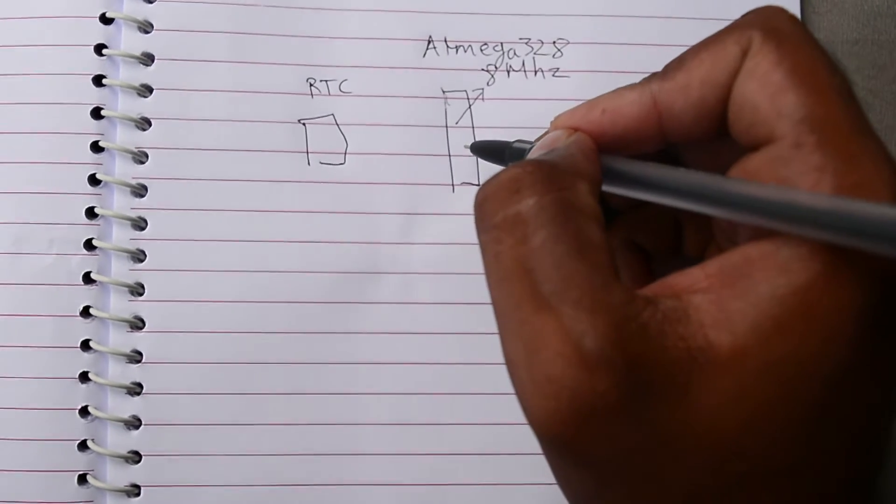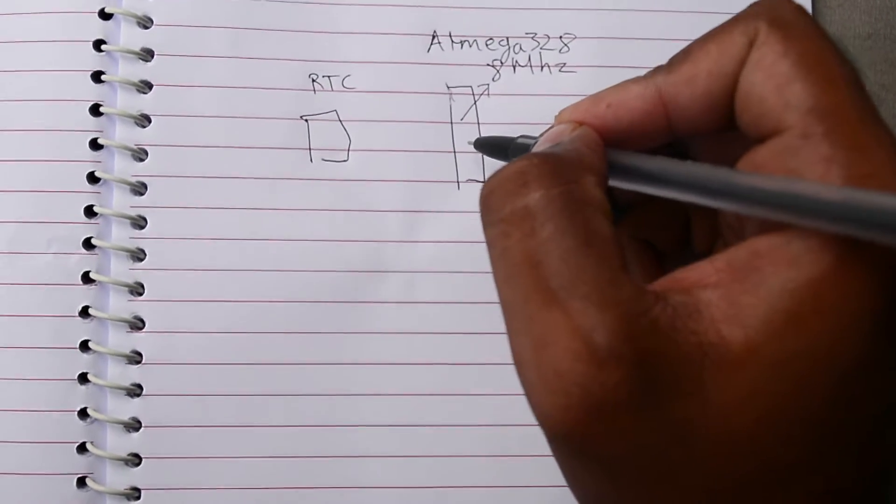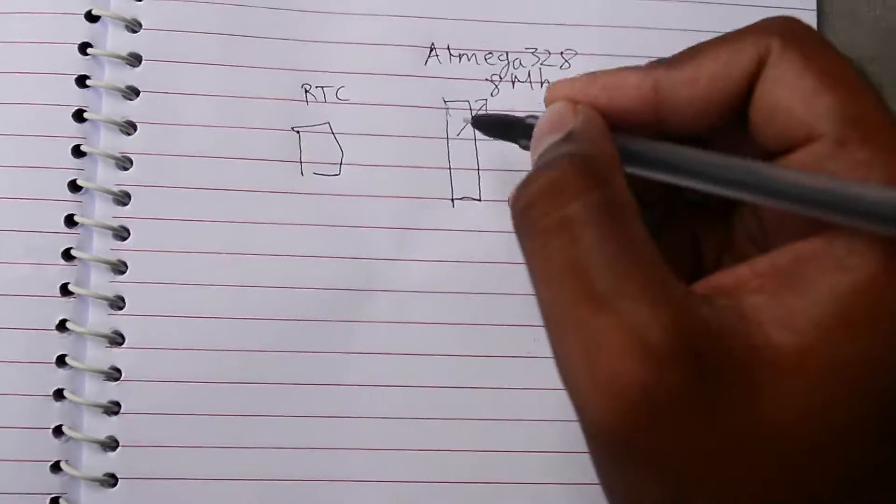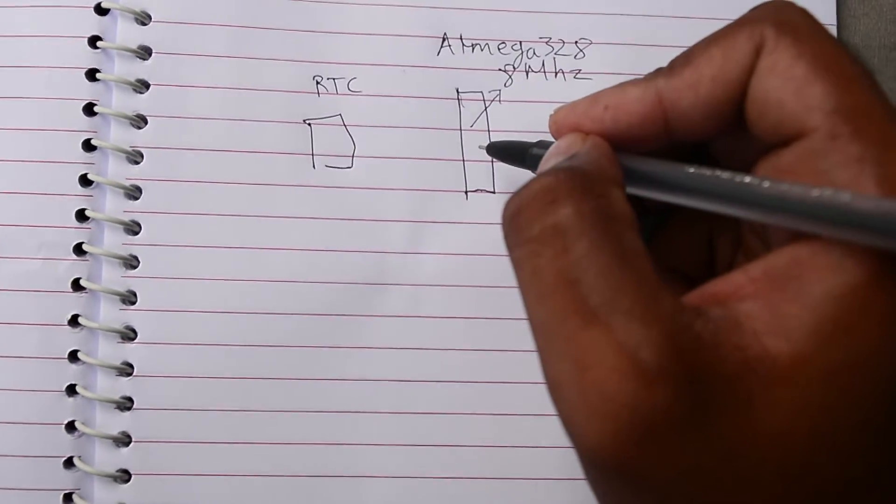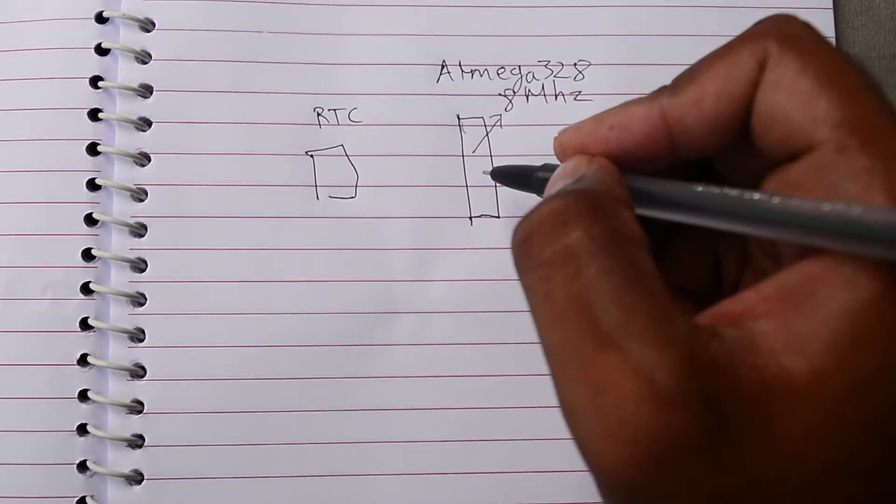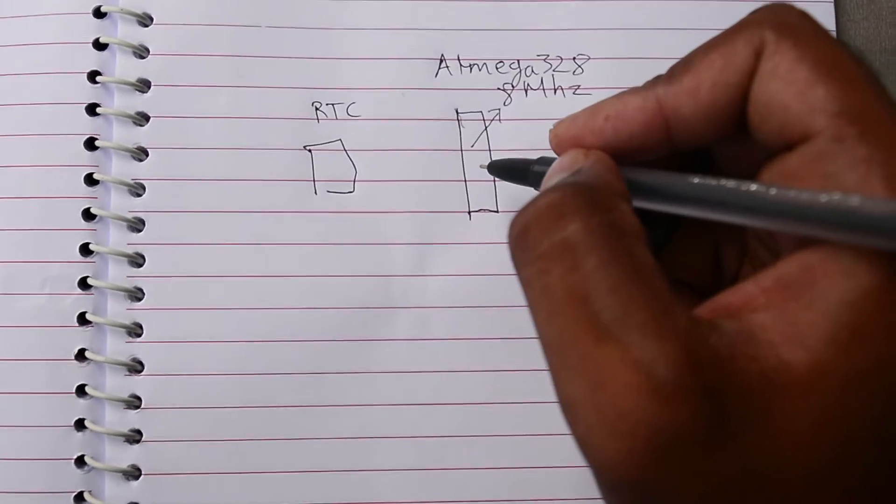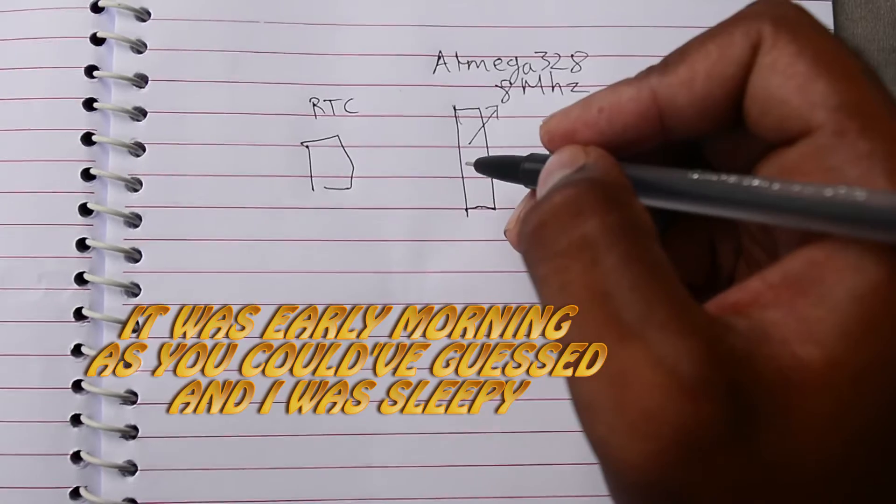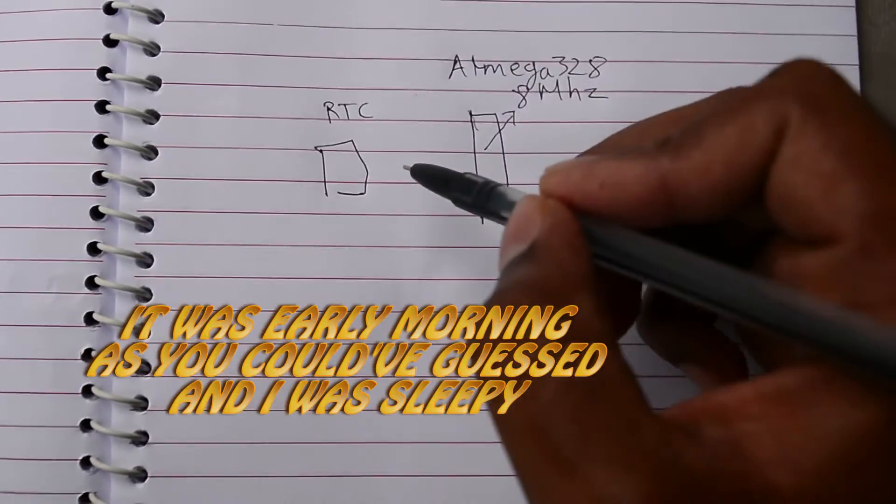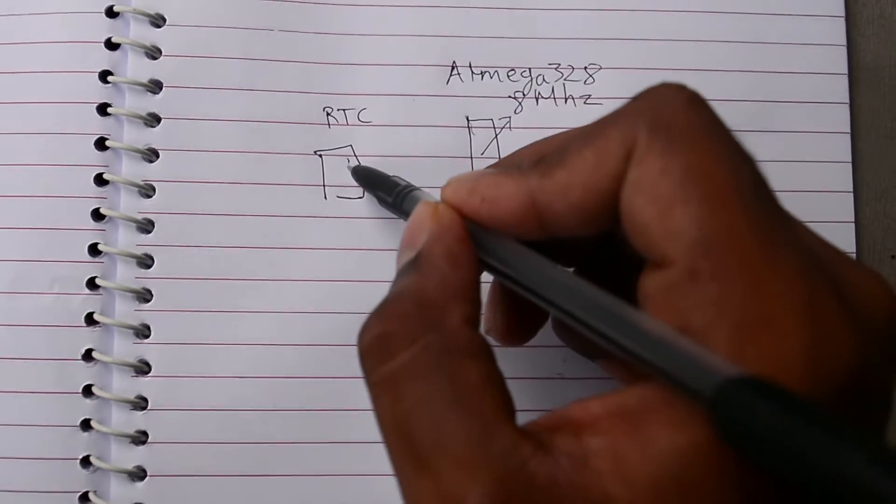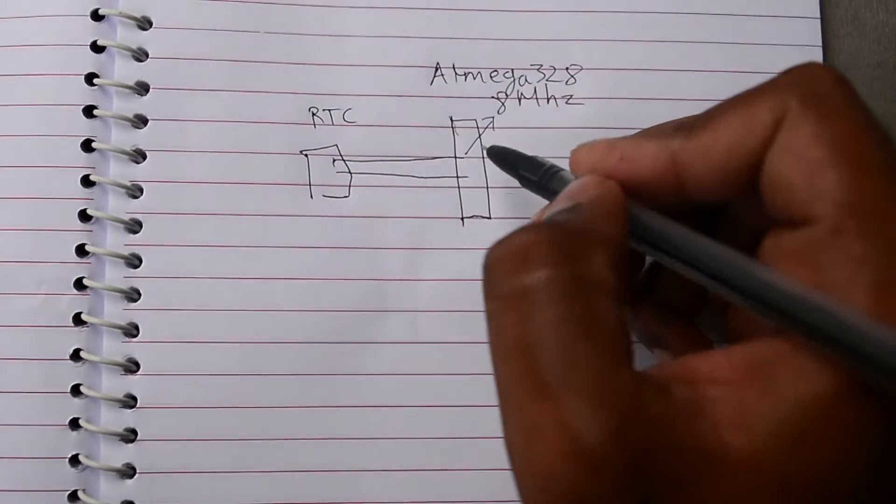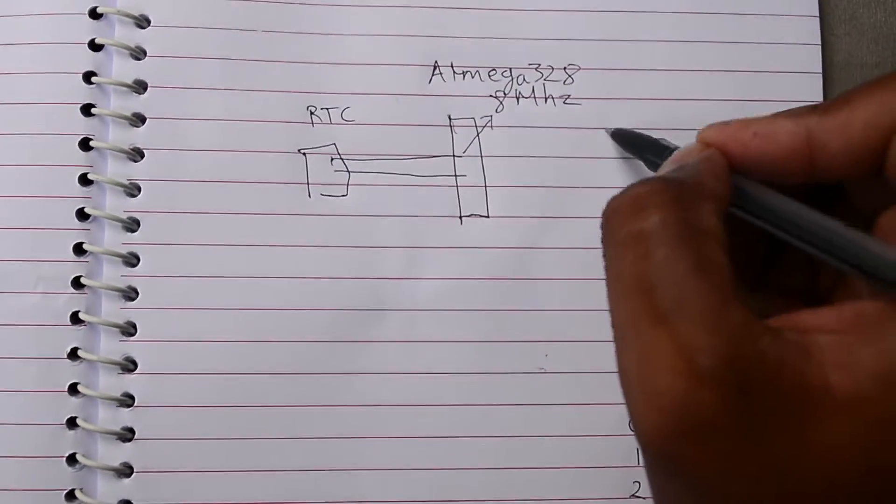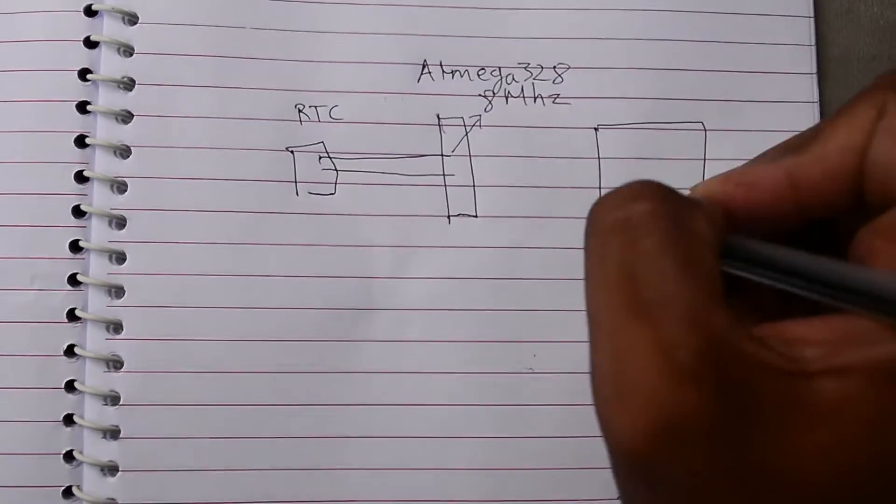You can actually use the ATmega 328 to keep the time. But once you power it off and on, the time will be reset and you will have to again set the time to get it accurate. So a real time clock keeps the time. You are going to read the time from RTC using the ATmega 328 and display it using an 8x8 LED matrix.